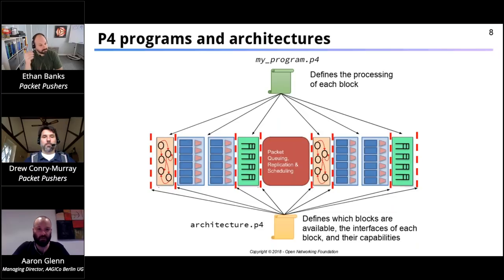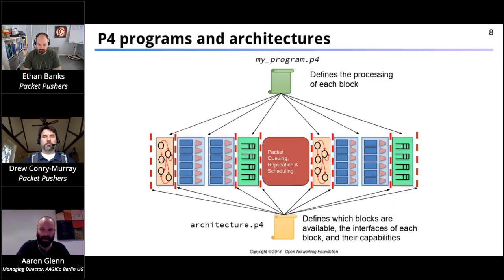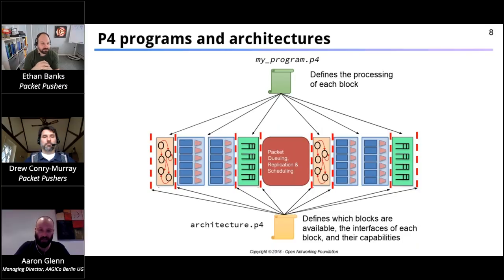We have our circles and arrows — that's our finite state machine parsers. Then we have any number of match-action tables to do actions on the packet, whether that be manipulate them, add a header, remove a header, or change part of a header. Once that ingress pipeline is done, it gets queued. In the middle you'll see packet queuing, replication, and scheduling. As it stands right now, P4 doesn't let you represent those things — they are fixed functions.